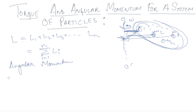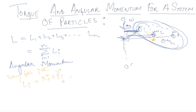To generalize, for the ith particle, we have angular momentum L_i, which is equal to the position vector r_i cross the linear momentum p_i. So L_i = r_i × p_i is your angular momentum for an arbitrary particle i.